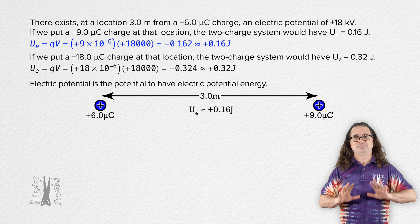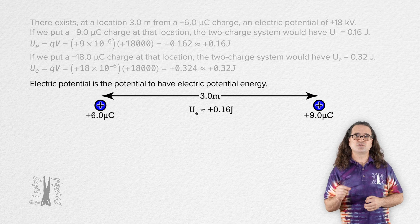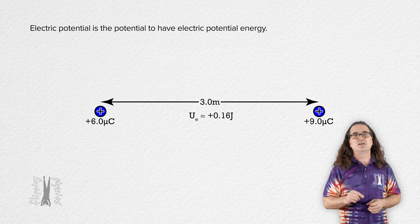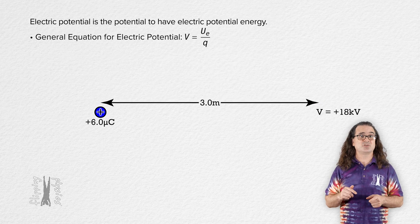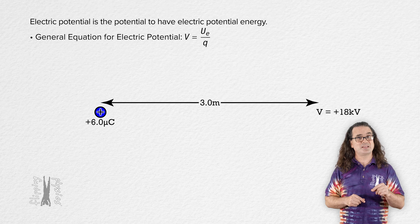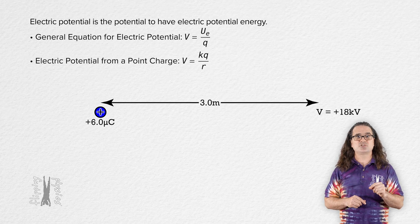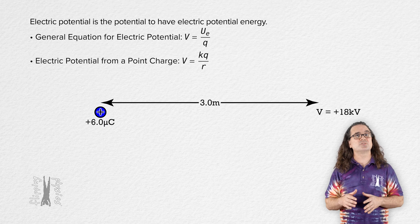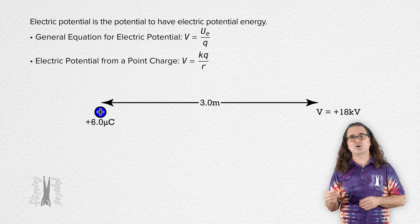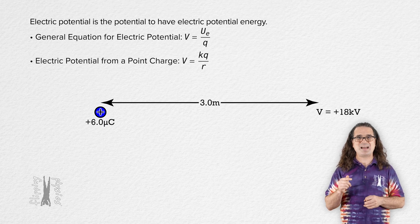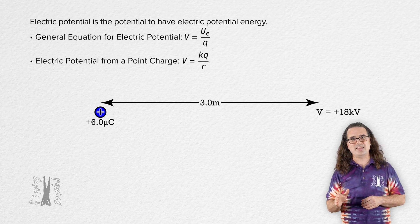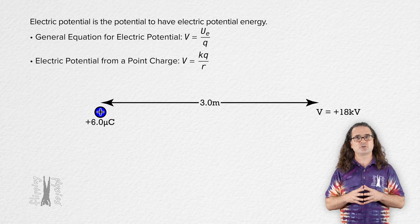The equations for electric potential are: the general equation — electric potential equals electric potential energy over charge — and the electric potential caused by a point charge equals the Coulomb constant times the charge divided by the distance from the center of the charge to the location of the electric potential.